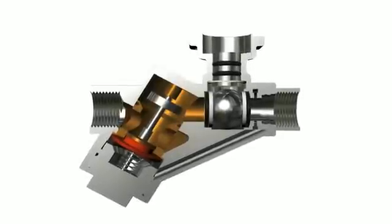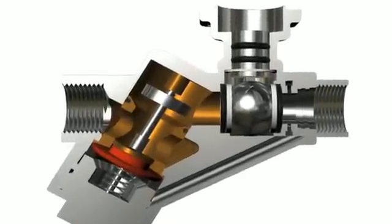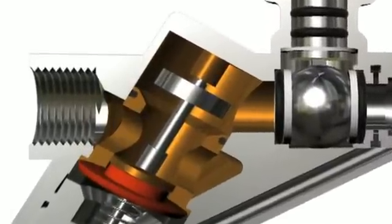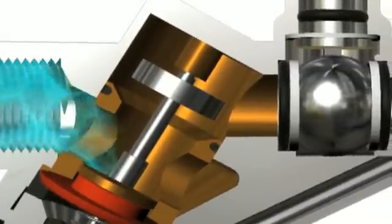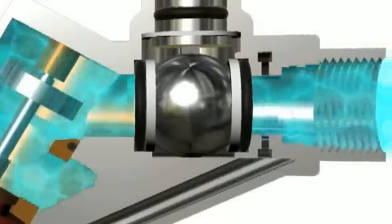The pressure independent characterized control valve, PICCV, is a two-way valve that combines the functionality of a control valve and a differential pressure regulating valve, creating one precise valve which is unaffected by pressure variations in a system.